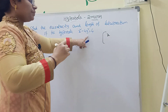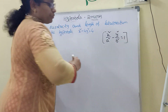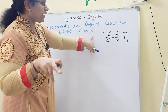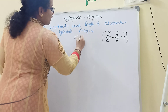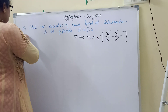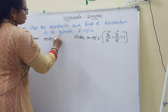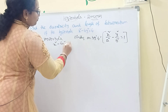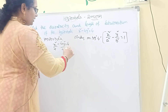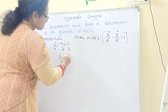Dividing x² − 4y² = 4 on both sides by 4 gives: x²/4 − y²/1 = 1. Comparing with the standard form, we get a² = 4 and b² = 1.